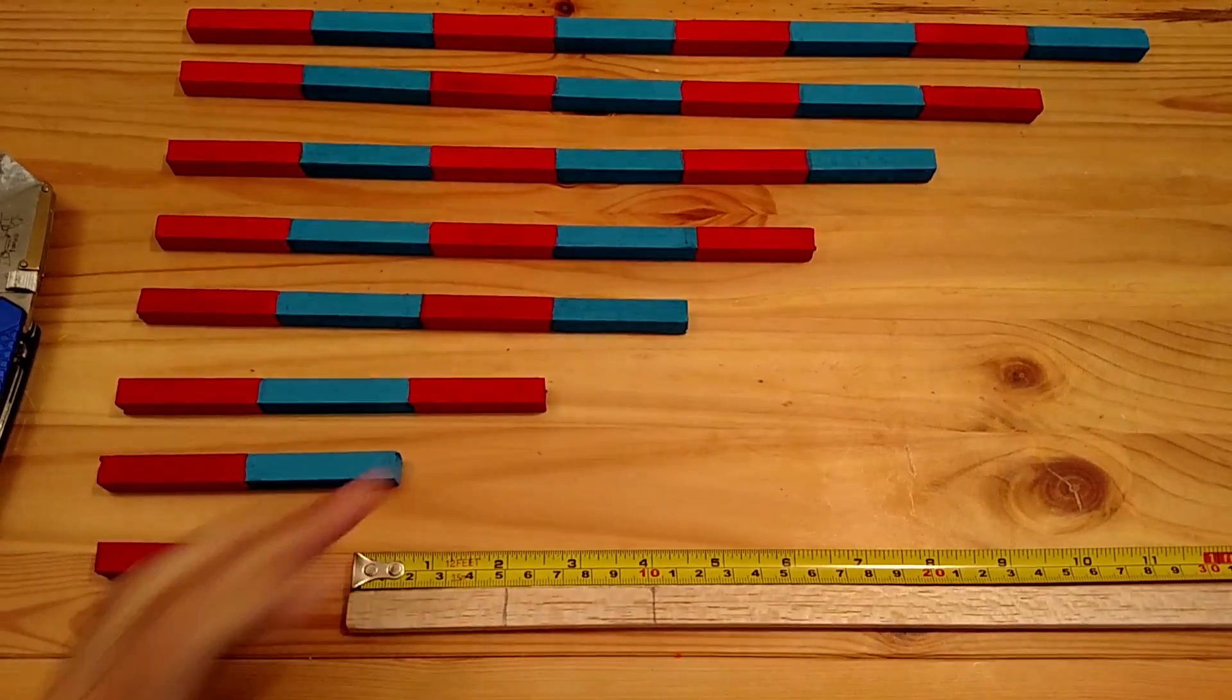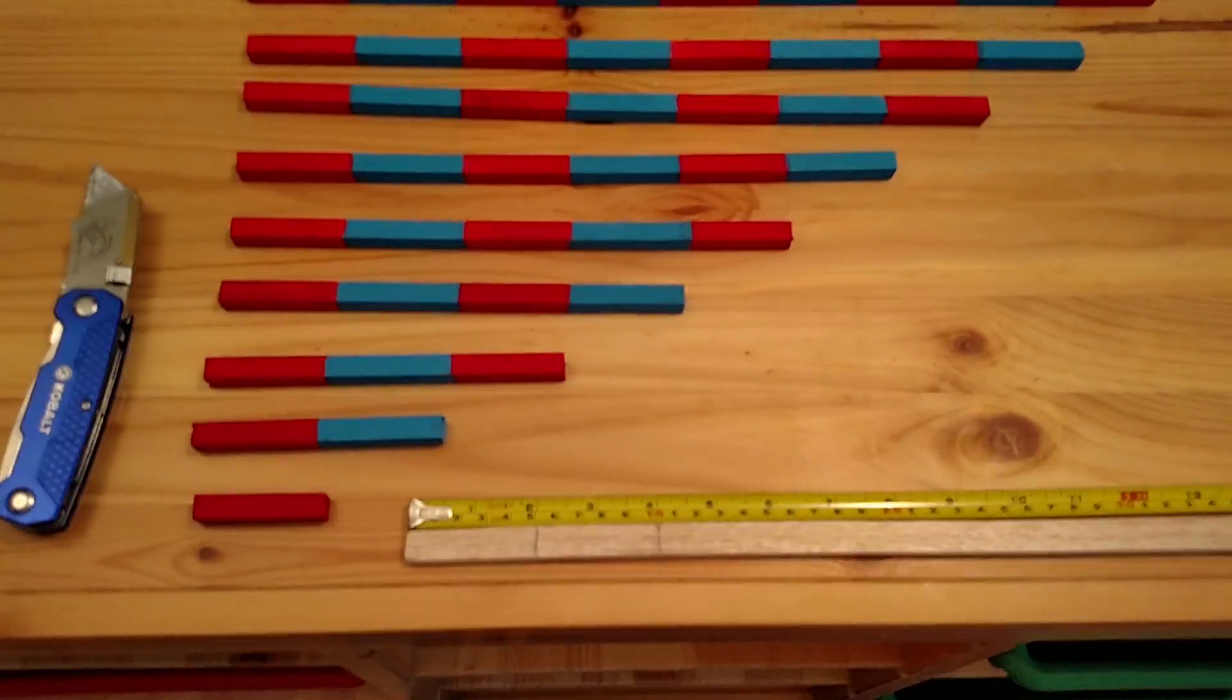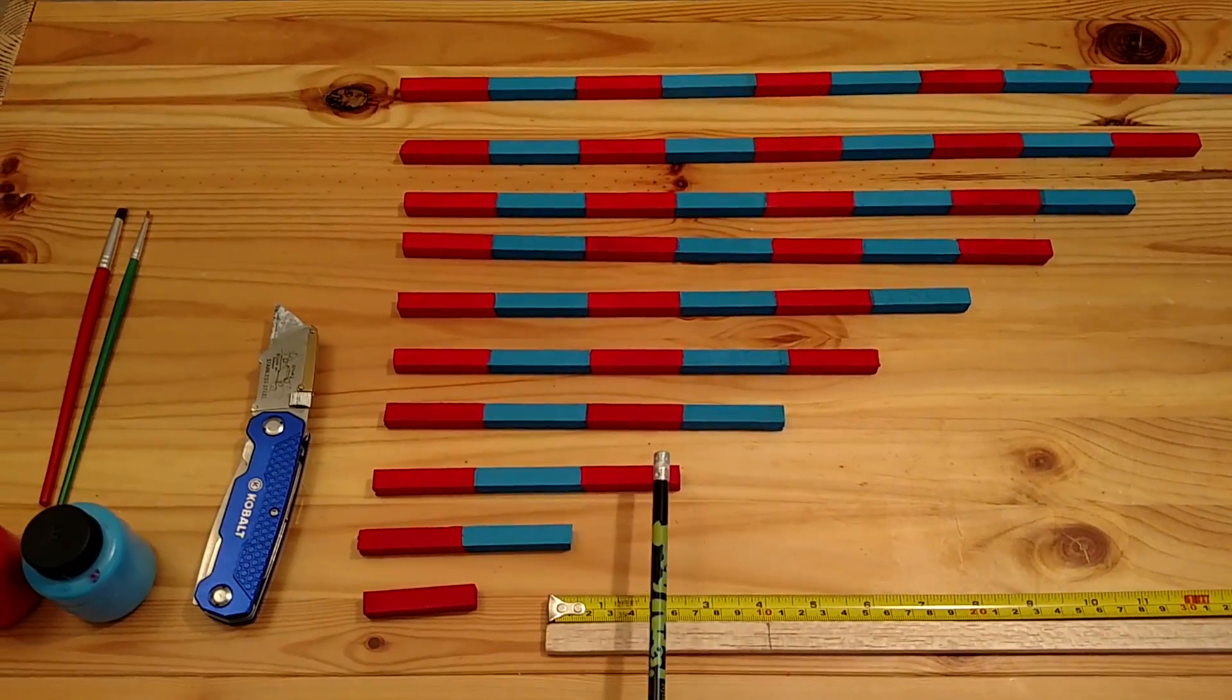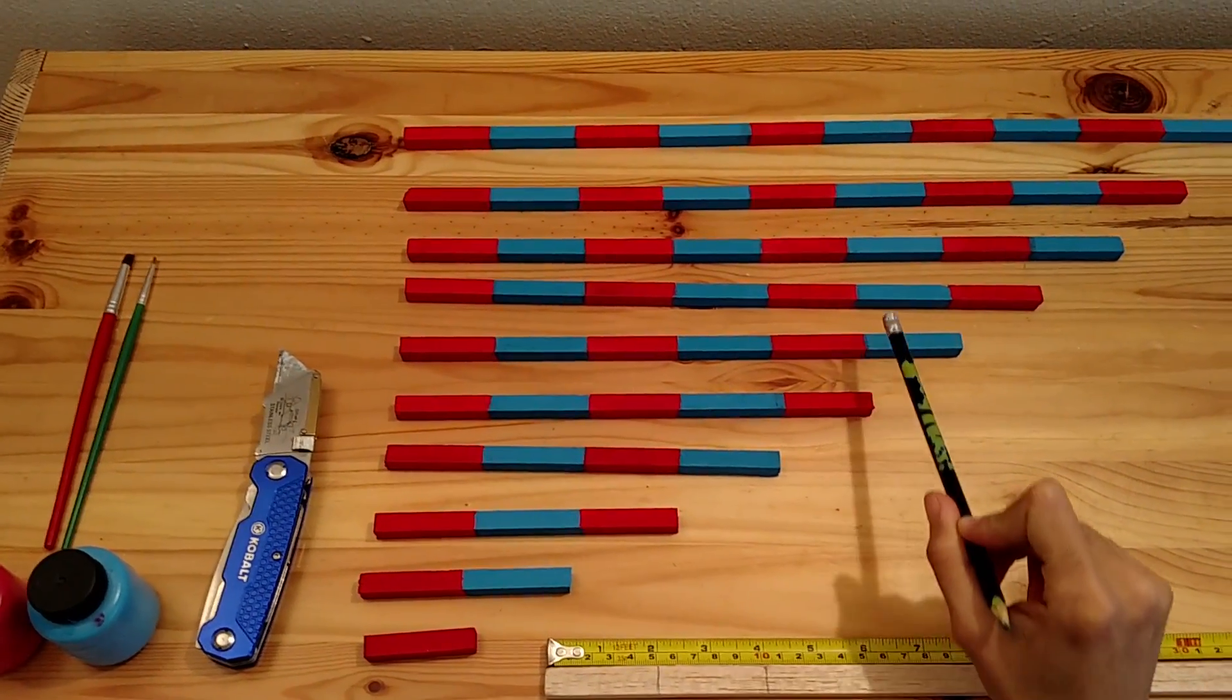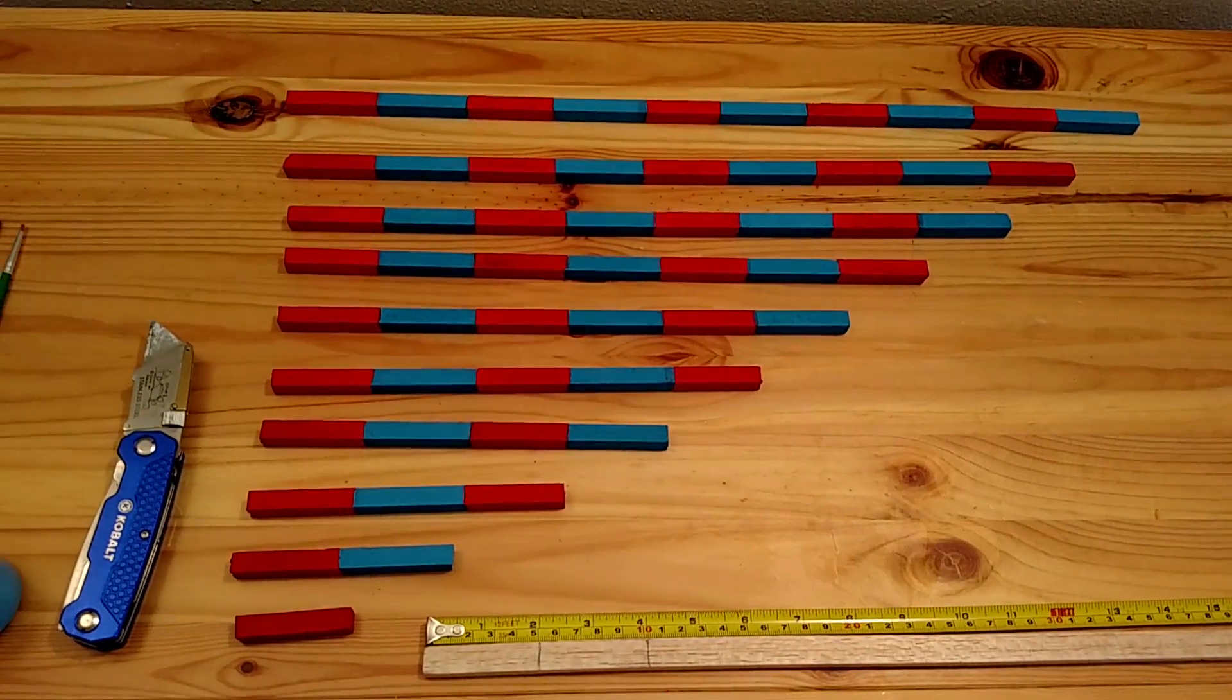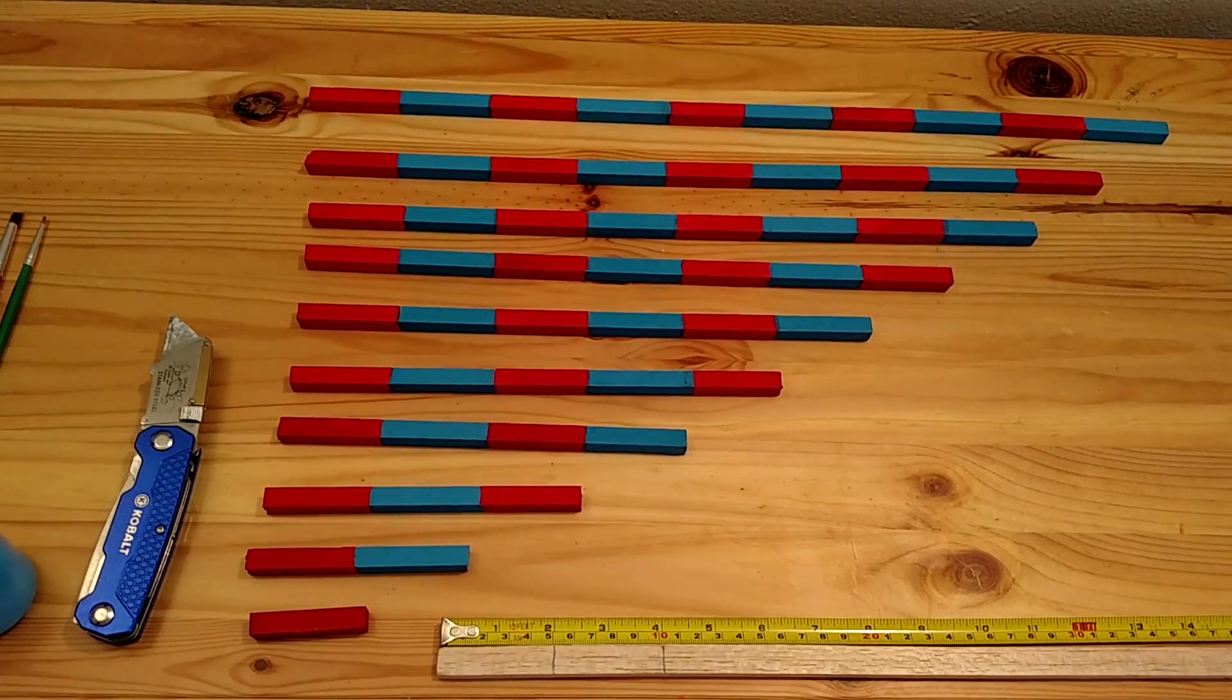As you can see, each one represents a number, so here's one, two, three, four, five, six, seven, eight, nine, and ten. You want to measure all your sticks according to the number quantities.